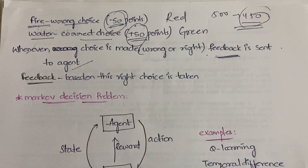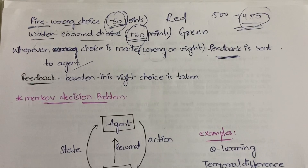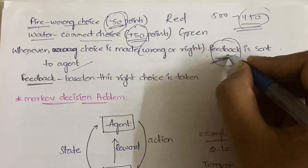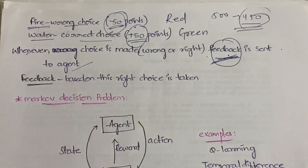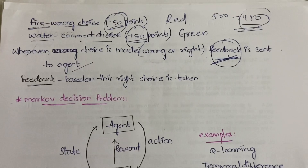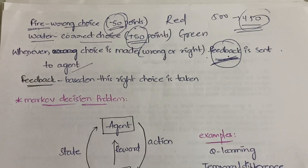Based on this feedback, the right choice is taken. From the next time, the agent gets habituated: if I choose fire I get negative 50, so I should always go with water. That conclusion the agent derives from the feedback we give — feedback is given regardless of whether the choice is right or wrong. By choosing fire he gets minus 50 so he'll never go for fire; by choosing water he gets plus 50, and since his goal is to maximize his points he'll always choose water.